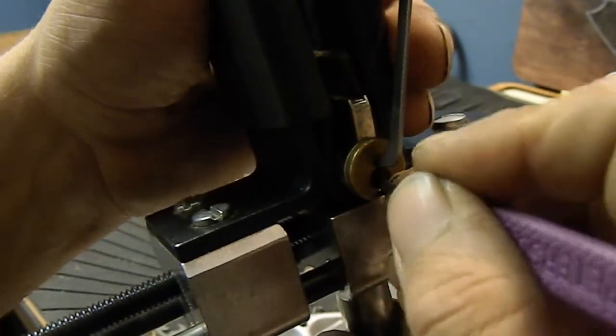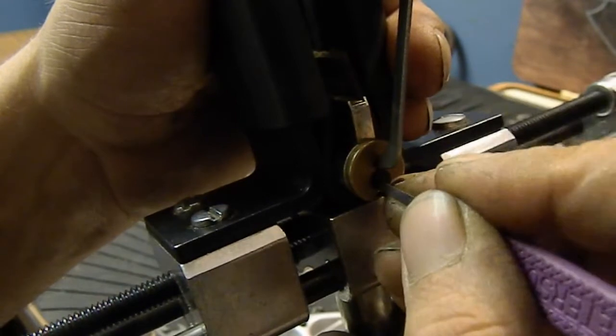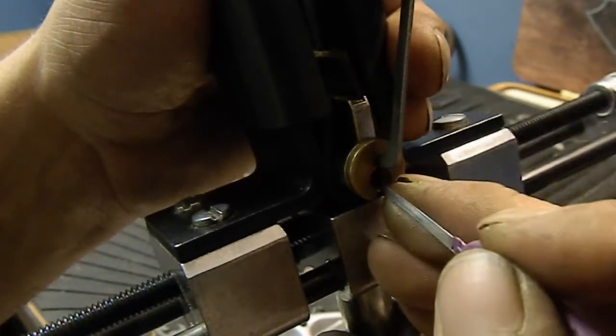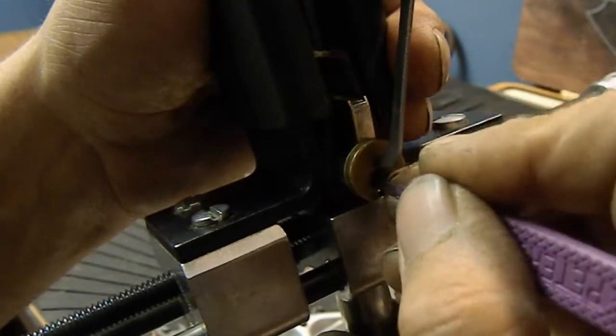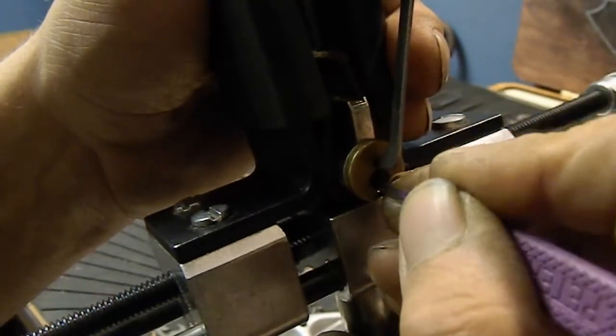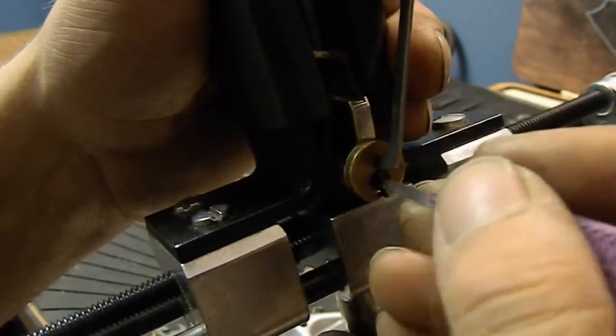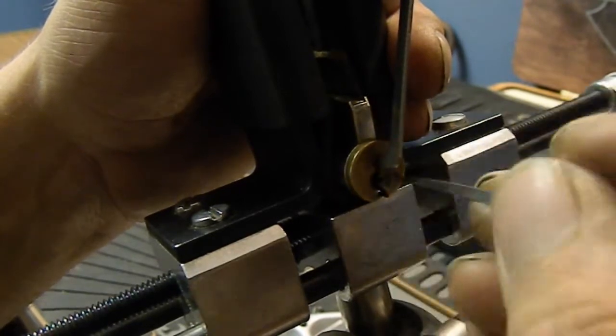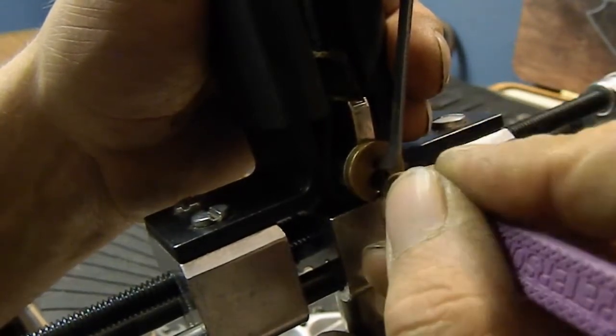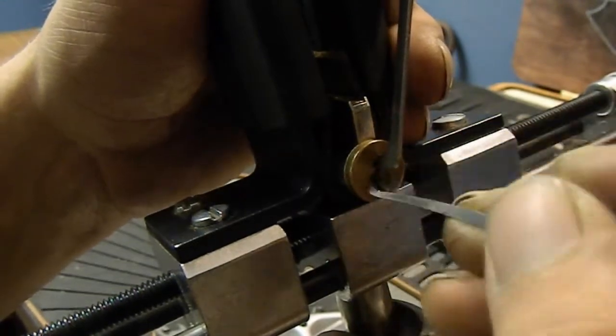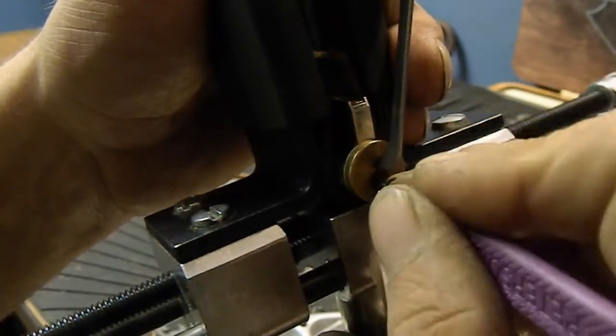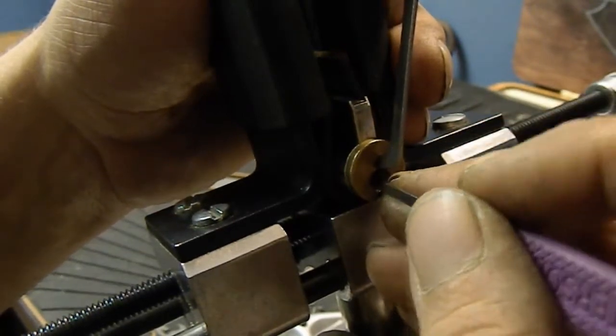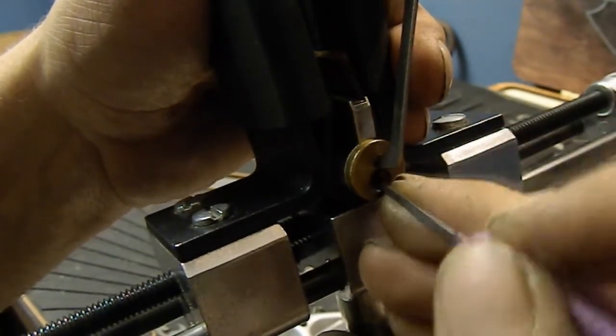I'm just walking the pins up, kind of pushing on like you would serrated pins even though they're standard I believe. Usually I think I've seen a Kaba Peaks with spools in it before, but I don't know if that was one that was pinned up by somebody else or if that was a stock lock, because most of the Kaba Peaks I've seen have had standard pins in them. Okay, there we go, it's got a good click on four and a click on three.